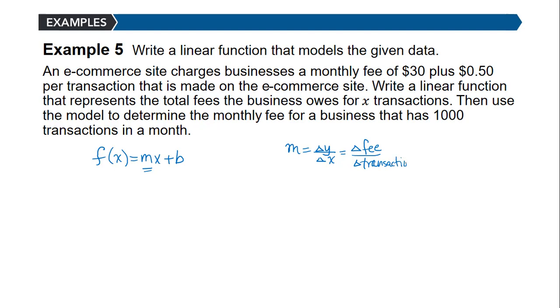This slope represents the change in fee per transaction, and we're actually given that information. The change in fee is $0.50. For every additional transaction I have to add $0.50 to my cost. The value of b represents that initial cost, the cost of zero transactions, which is that monthly base fee of $30. Therefore the function is f(x) = 0.50x + 30.